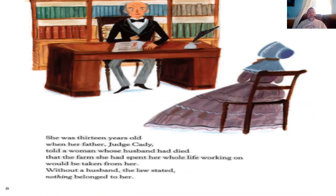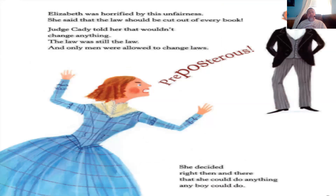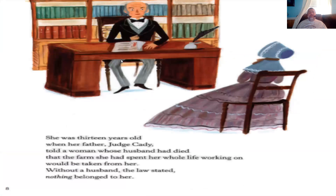Let's go back and read pages 8 and 9. Page 8: she was 13 years old when her father Judge Cady told a woman whose husband had died that the farm she had spent her whole life working on would be taken from her — without a husband, the law stated nothing belonged to her. Page 9: Elizabeth was horrified by this unfairness. She said the law should be cut out of every book. Judge Cady told her that wouldn't change anything — the law was still the law and only men were allowed to change laws. As shown in the picture, Elizabeth became very upset and said 'Preposterous!' She decided right then and there that she could do anything any boy could do.